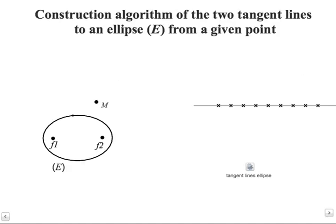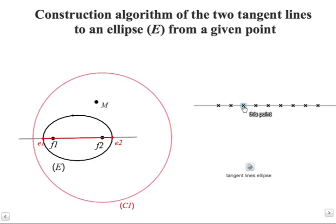So now, how is it possible to construct the two tangent lines from a point, two tangent lines to an ellipse from a point M. The ellipse is given by the two foci and a point here. So we start by this line, the intersection points and the segment E1, E2. The director circle associated to F2.